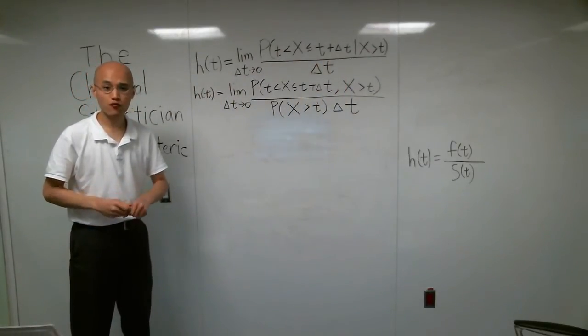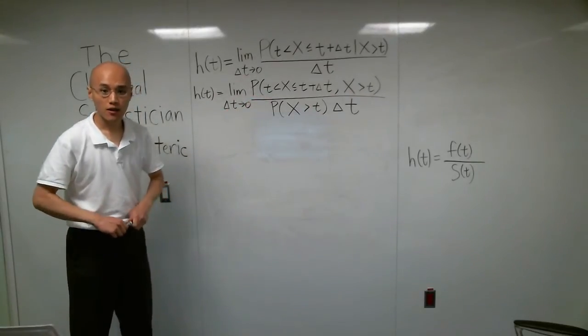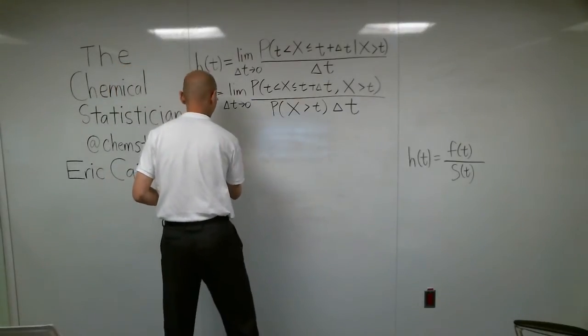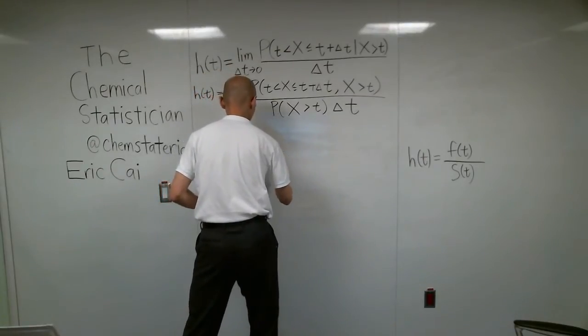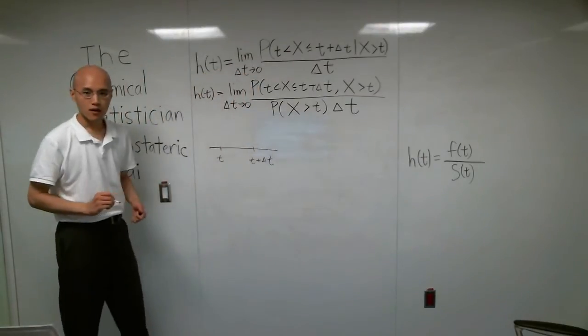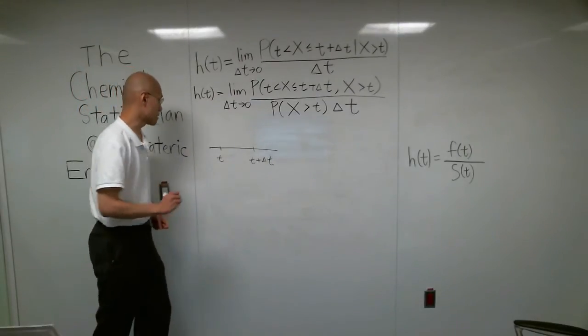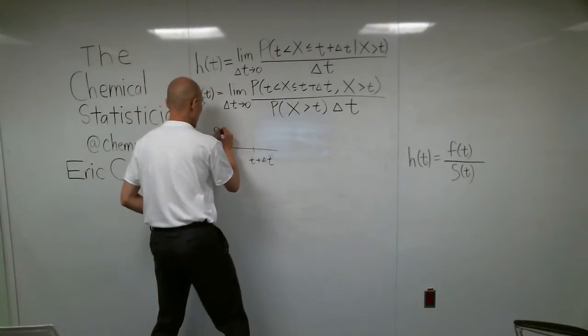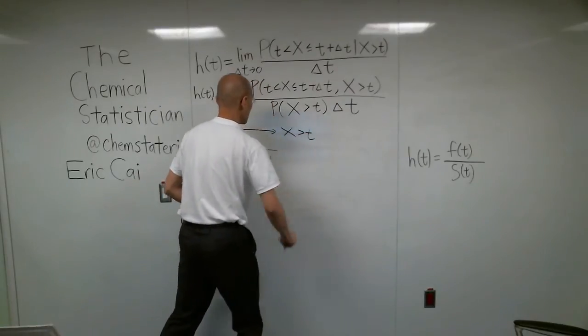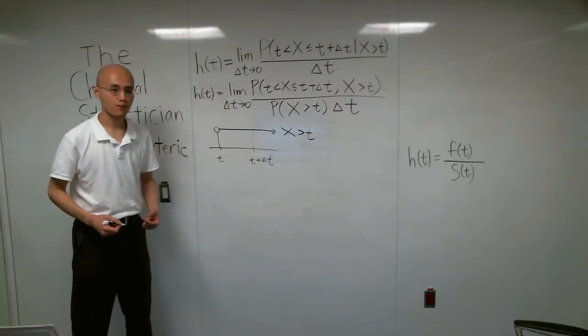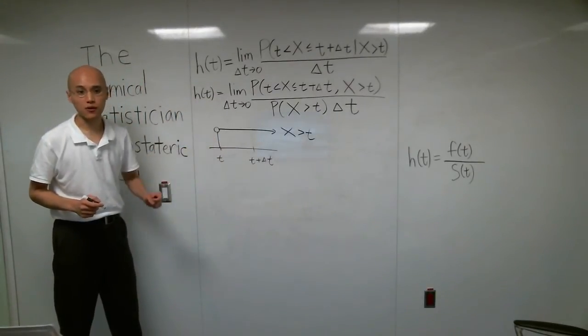Now, I hope that you can recognize that those two events can be written on a number line. Here's what I mean. Here's a number line with the times t and t plus delta t. And this event right here is the event x is bigger than t. Notice how I used an open circle to denote that x is strictly bigger than t.